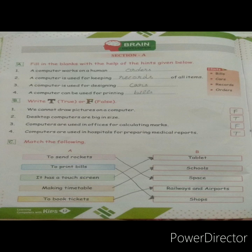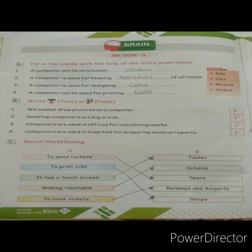Second — computer is used for keeping records of all items. The answer is 'records'. Third — computer is used for designing cars. We can design cars with the help of computers. Fourth — computer can be used for printing bills. We can print bills using a computer.